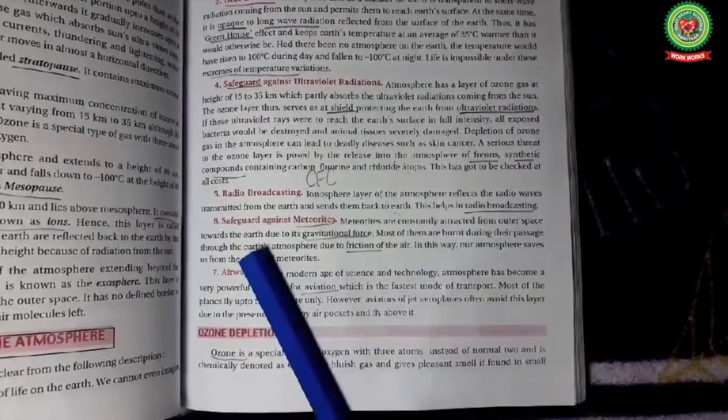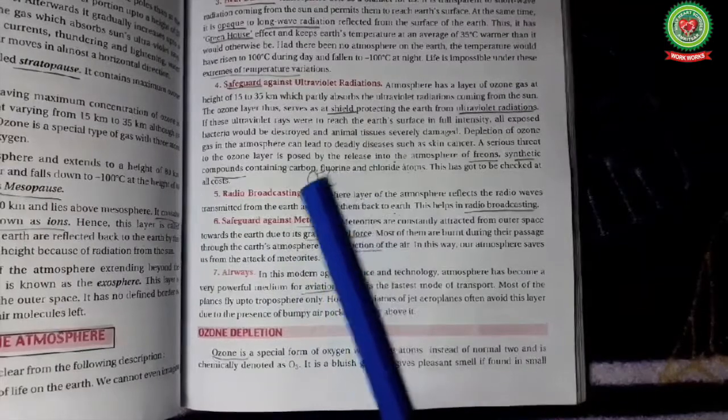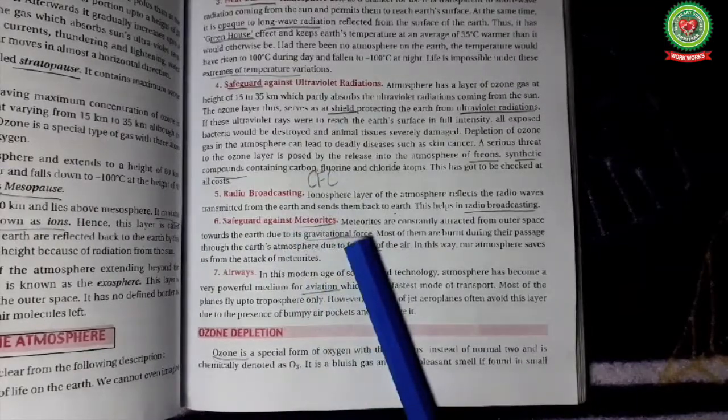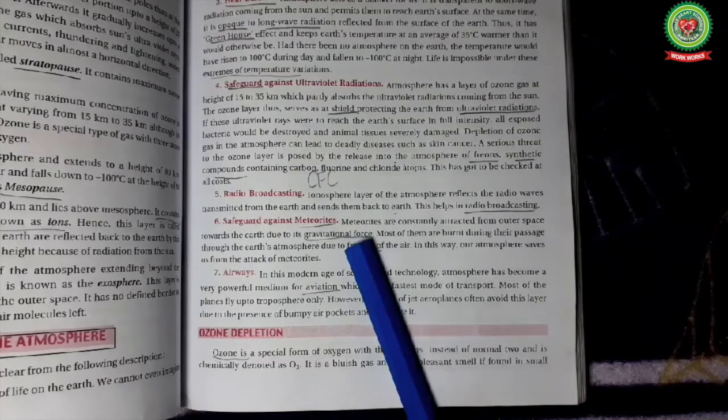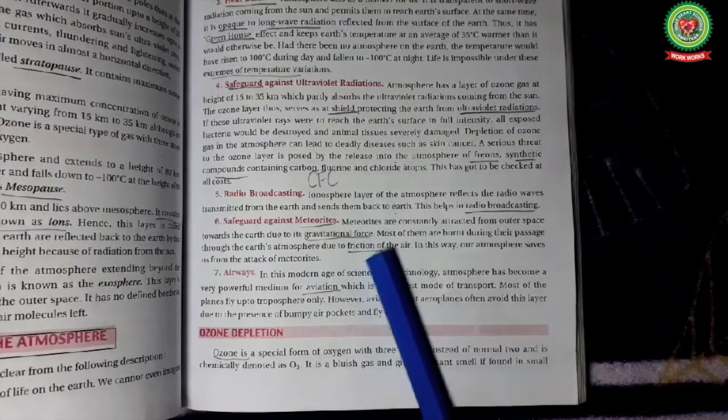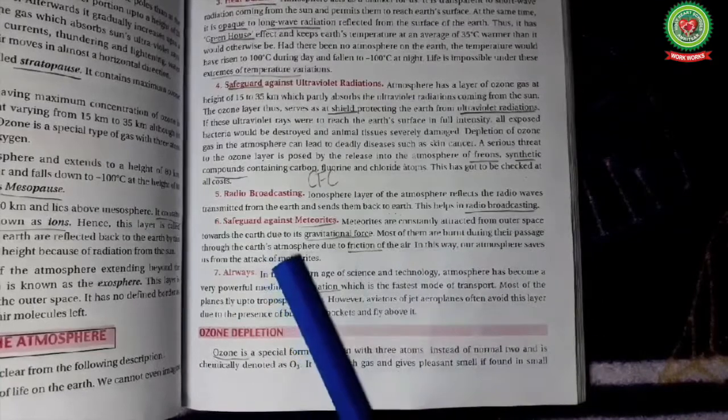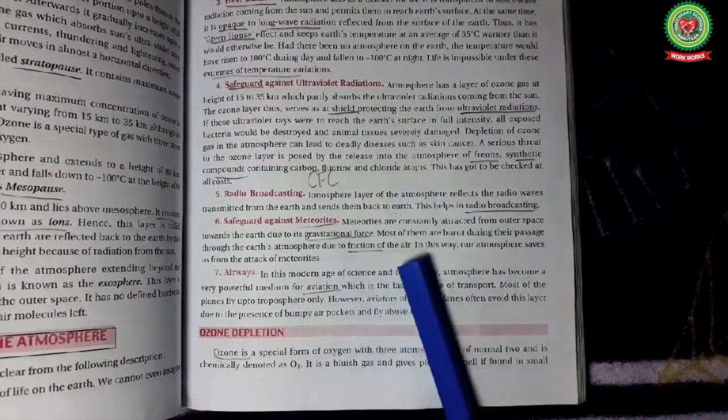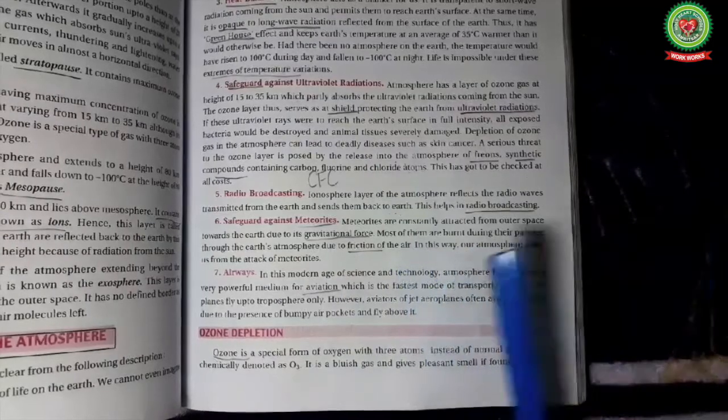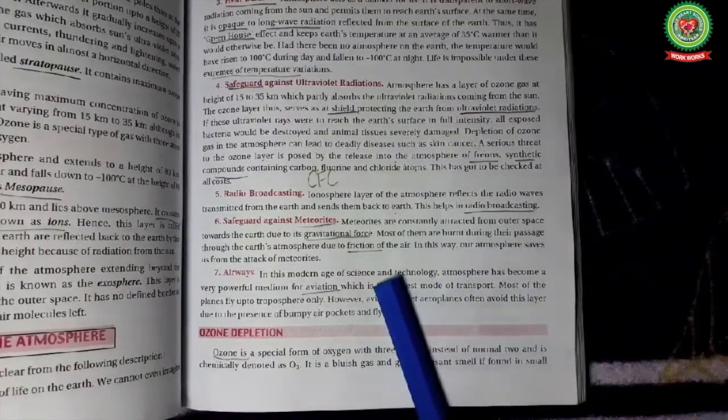Safeguard against meteorites: meteorites are the large pieces of rocks which fall on the earth, they can create large damages. Meteorites are constantly attracted from outer space towards the earth due to gravitational force of the earth. Most of them burn on the way due to friction in the mesosphere.